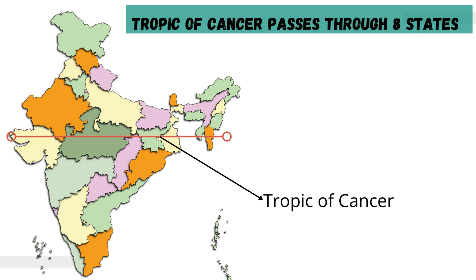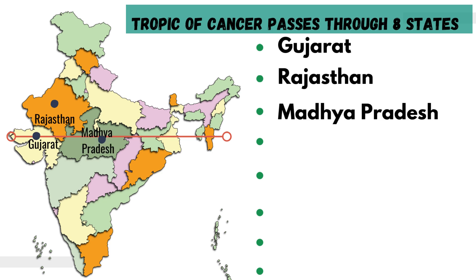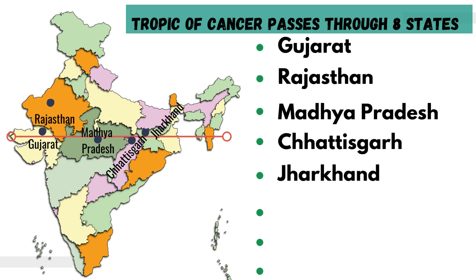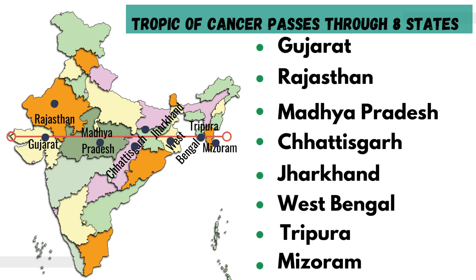The Tropic of Cancer passes through eight states in India. These states are: Gujarat, Rajasthan, Madhya Pradesh, Chhattisgarh, Jharkhand, West Bengal, Tripura, and Mizoram.